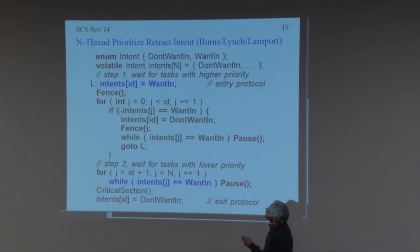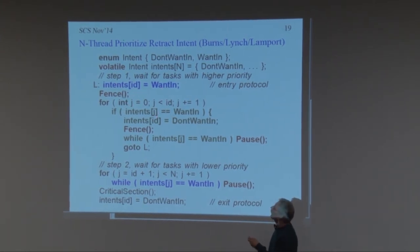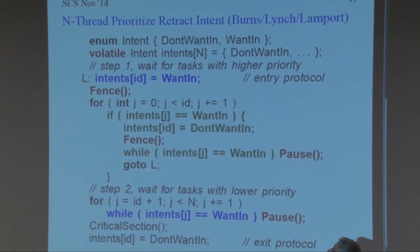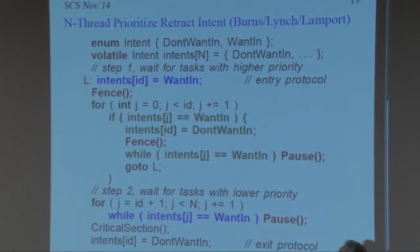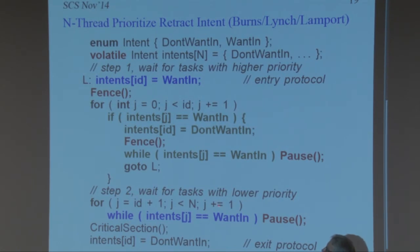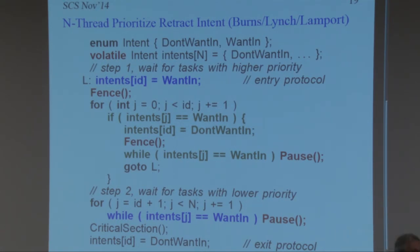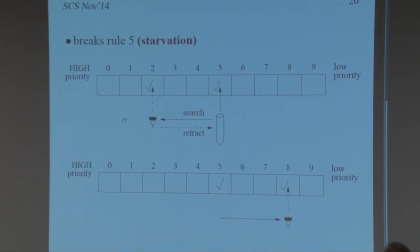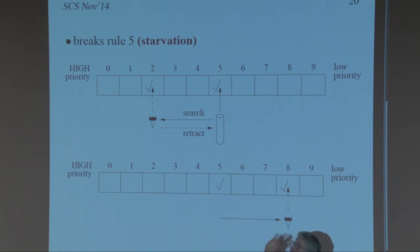So the algorithm has two phases: phase one, go in the high-priority direction, retract intent if someone there wants in, then restart; phase two, go in the low-priority direction, wait for anyone with lower priority who wants in to retract. The problem is starvation: if I'm task five and tasks zero through three are constantly coming in, I'll never get to the end.